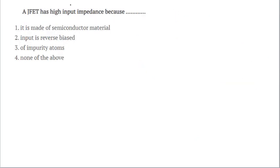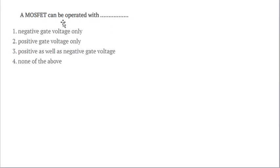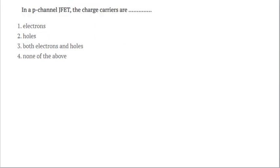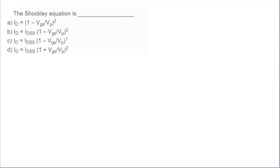A JFET has high input impedance because the input is reverse biased. Option B is the correct answer. A MOSFET can operate for both positive as well as negative voltage. Therefore, option C is the correct answer. In a P channel JFET, the charge carriers are the holes here. The Shockley equation is given by ID equals IDSS bracket 1 minus VGS upon VP whole square. Therefore, option B is the correct answer.